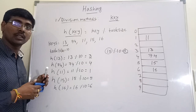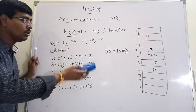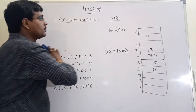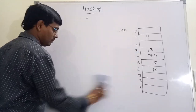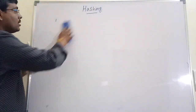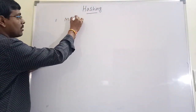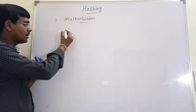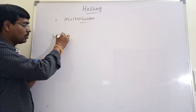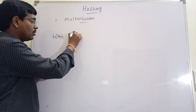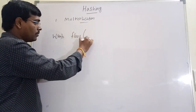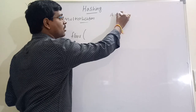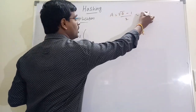This is the division method and the basic method for all hashing operations. Next we will move to some other methods. The next method is the multiplication method.